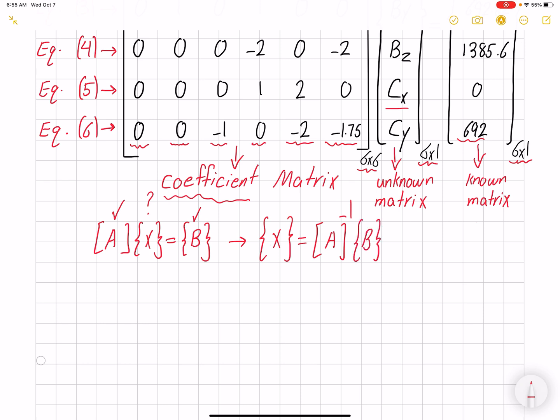This one would be 6x6, this one would be 6x1, and then the result would be 6x1. But taking an inverse of a 6x6 matrix is not easy, so we always use softwares. MATLAB is matrix lab, so it's designed for doing matrix multiplication.